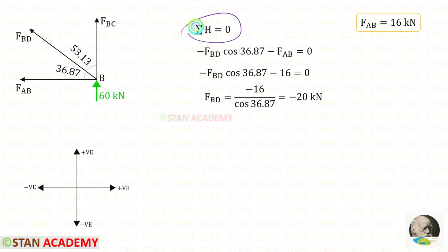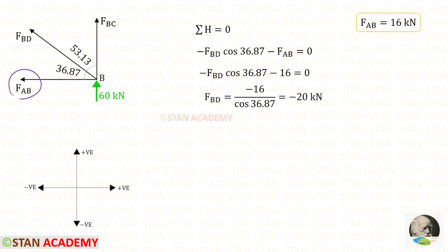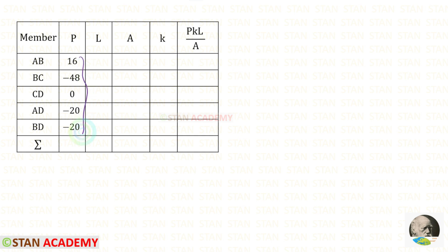Using sigma H = 0 at joint B, we find Fbd. Since Fbd is inclined, we have to resolve it in the horizontal direction. To keep it horizontal we need this angle, so with Fbd we multiply cos 36.87°. Since it is acting towards the left side it will be negative; Fab is also acting towards the left side so it is negative. We already found Fab, so applying that, for Fbd we will get −20.